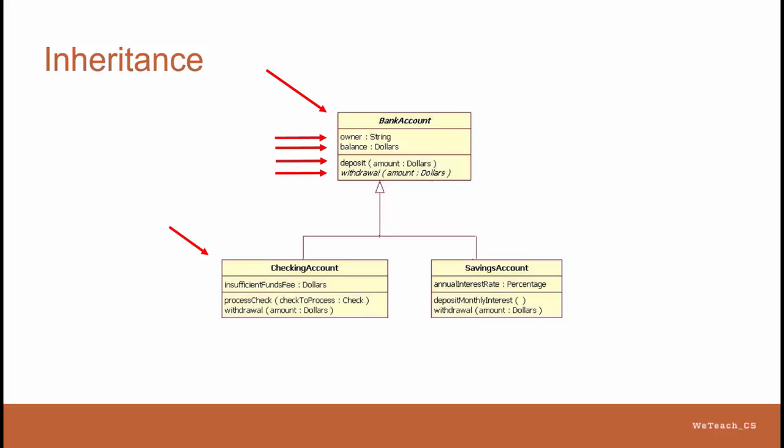That basic account is then inherited by two more specialized types of bank accounts, a checking account and a savings account, both of which automatically get all of what was defined in the basic bank account, and then add more characteristics that only relate to that specific account, like the insufficient funds fee and process check method for the checking account, and the annual interest rate and the interest deposit process for the savings account.